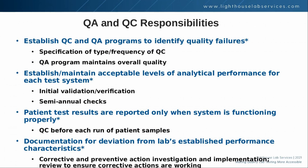CLIA requires that the lab director develop a quality system consisting of both a quality control and quality assurance program. Together, these are used to identify any failures in quality as they occur. For the QC program, it's important that the lab director defines the type of QC to be used and how often QC should be performed in the laboratory, and this is going to vary based on the testing performed by the laboratory.